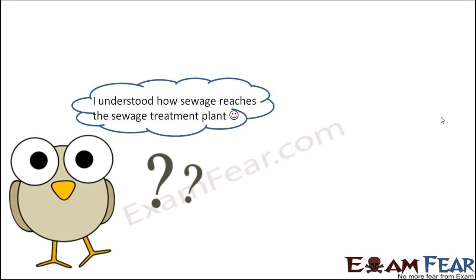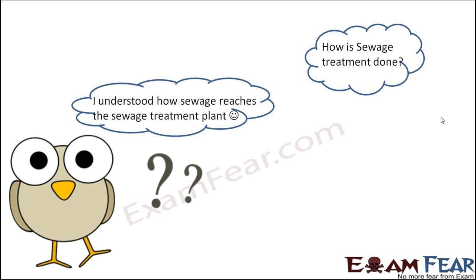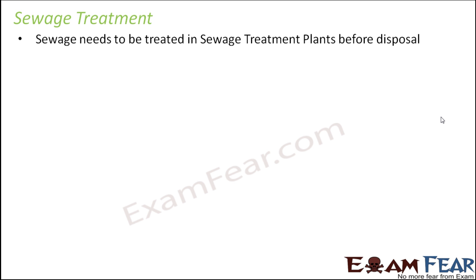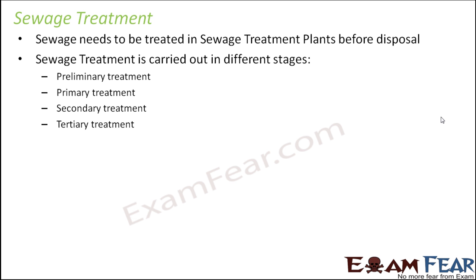We now understand how sewage gets carried to the sewage treatment plant. The next question is: how is sewage treatment done? What happens inside the sewage treatment plant that converts wastewater into clean water? Sewage needs to be treated before disposal because we cannot dispose wastewater containing harmful chemicals, pesticides, paints, and harmful microorganisms directly into water bodies — that would pollute the entire water body.